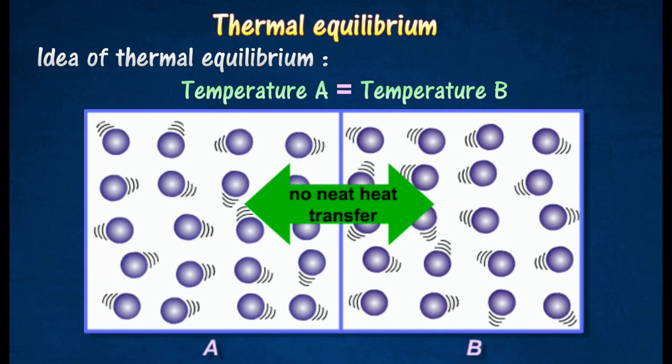When this happens, the rate of heat transfer from A to B will be the same as that from B to A. Objects A and B are then said to be in thermal equilibrium.